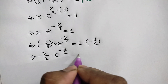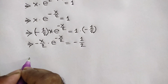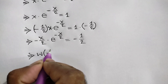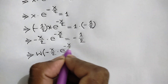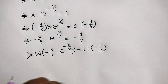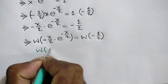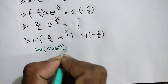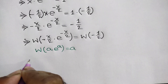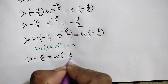Now taking the Lambert W function on both sides, we can write W of negative x over 2 times e to the power negative x over 2 is equal to W of negative half. We know the Lambert W function rule: W of a times e to the power a is equal to a. Applying this, we get negative x over 2 is equal to W of negative half.